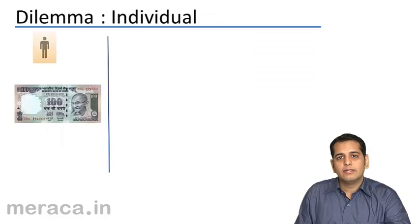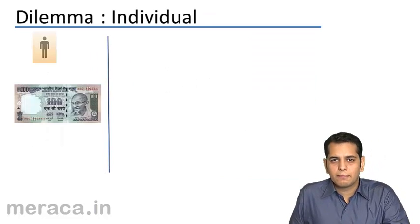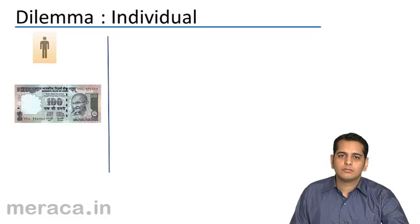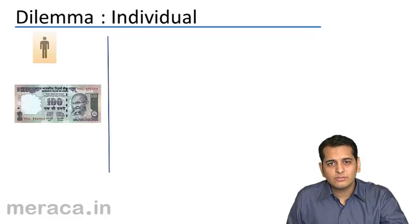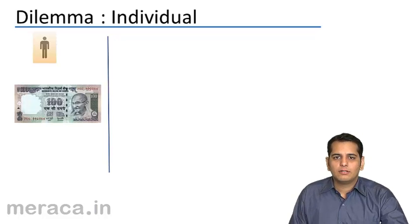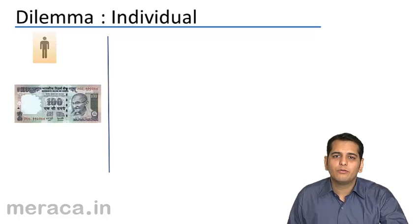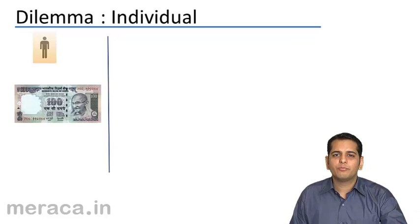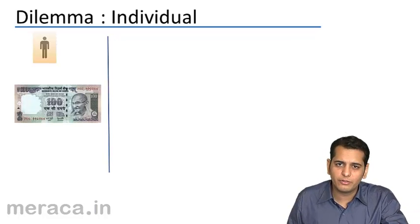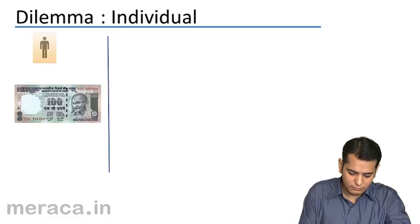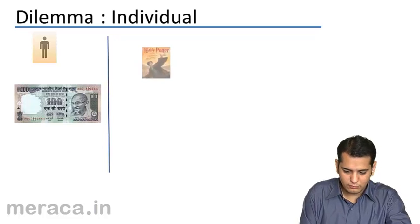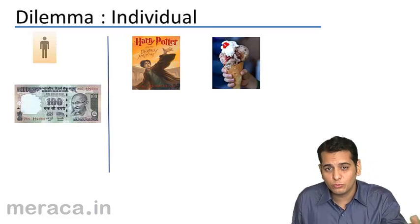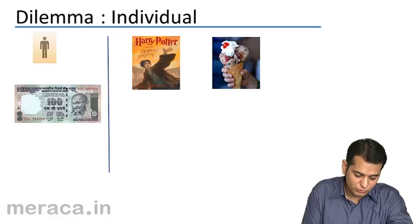Let's start with economics for an individual. Let's understand what is the dilemma that an individual faces. The money that he has is limited, but he has unlimited wants. If I give you 100 rupees, what will you do with those 100 rupees? You may go for a movie, or you may want to go to an ice cream parlor and have a scoop of ice cream.